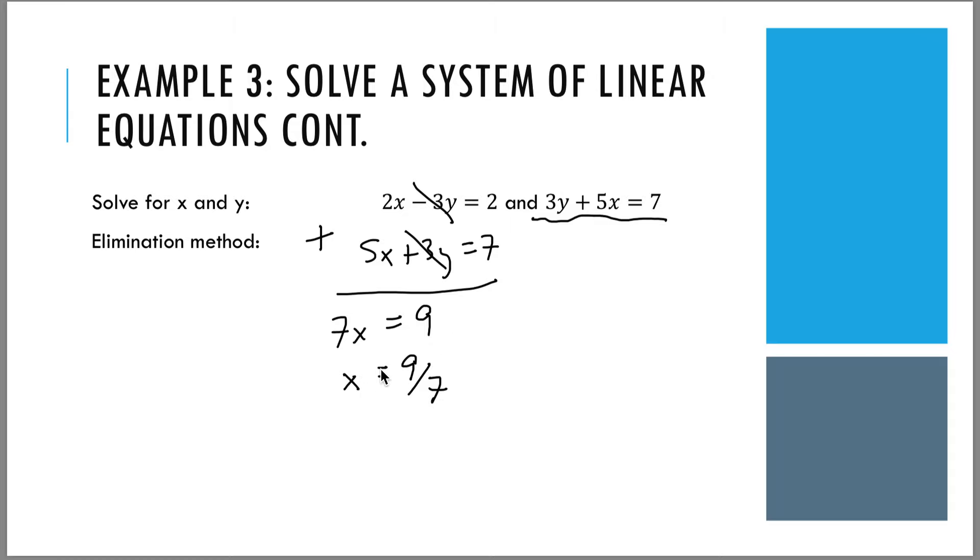Now that we have found x, now we do need to go ahead and use the substitution method one more time in order to be able to solve for y. We can plug in this x value into either of the two equations to solve for y. Let's put it in the second equation. We have 3y + 5, but I'm going to plug in 9 over 7 for the x equals 7. We get 3y equals 7 minus all of this, which is 45 over 7. Plug all of this in the calculator and then divide all of this by 3. And you'll end up getting the exact same answer that we got before for y, which is 4 over 21.